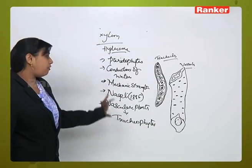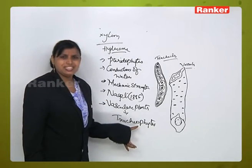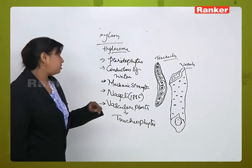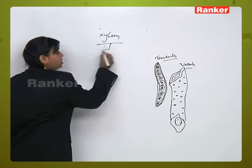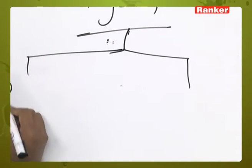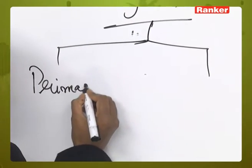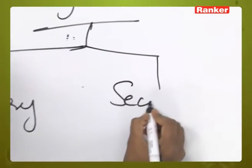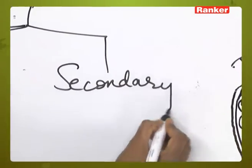Depending upon the origin of the xylem tissue, it is of two types: primary xylem and secondary xylem.